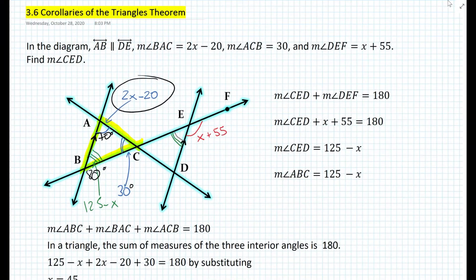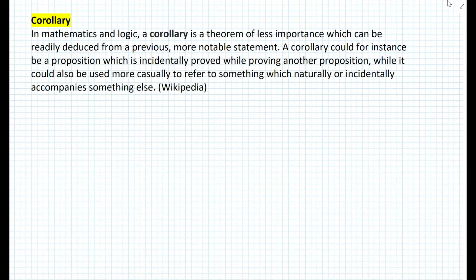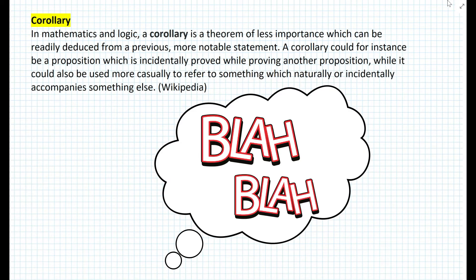As you can see from this lesson, there are many corollaries that follow from this. Let's first define the word corollary. Here's the definition according to Wikipedia: in mathematics and logic, a corollary is a theorem of less importance which can be readily deduced from a previous, more notable statement. A corollary could, for instance, be a proposition which is incidentally proved while proving another proposition.